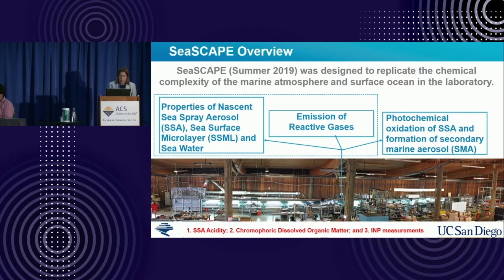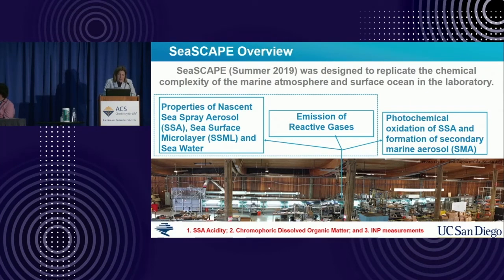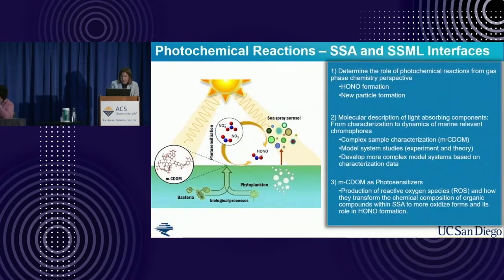In our last experiment in summer 2019—and thankfully we did that experiment then because we had a lot of data to analyze while sitting at home in 2020. My group was leading efforts on sea spray aerosol acidity, which we published in PNAS. We also collected chromophoric dissolved organic matter and did ice nucleation measurements. We really wanted to understand the photochemistry—particularly the production of HONO (nitrous acid) in the marine boundary layer, which is not well understood.